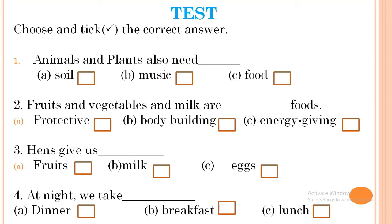Now let's come to the test. Choose and take the correct answer. Question one: Animals and plants also need — soil, music, or food? The correct answer is food. Question two: Fruits, vegetables, and milk are dash foods — protective, bodybuilding, or energy giving? The correct answer is protective food. Question three: Hens give us — fruits, milk, or eggs? The correct answer is eggs. Question four: At night we take — dinner, breakfast, or lunch? The correct answer is dinner.